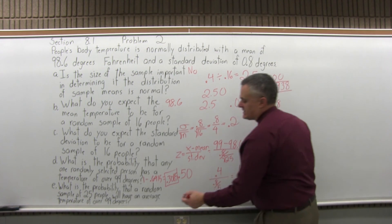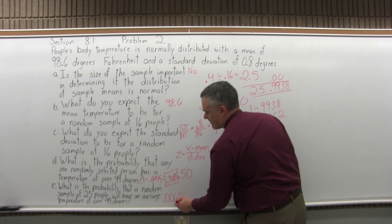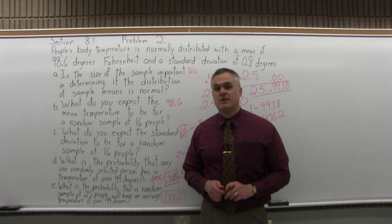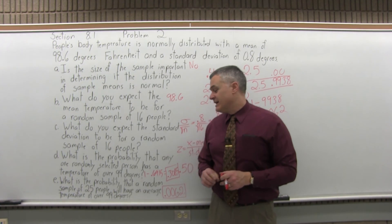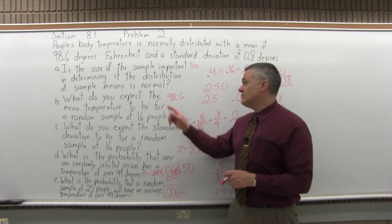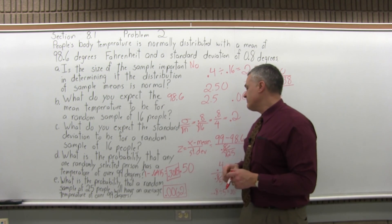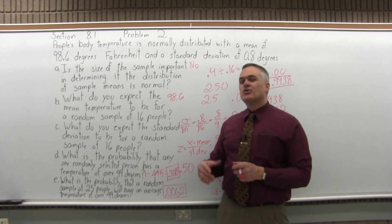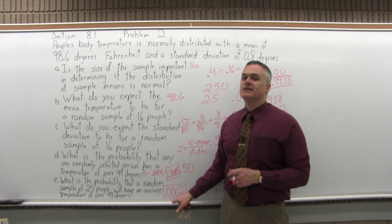So the probability of taking a random sample of 25 people and having their average temperature be over 99 degrees is very unlikely — even though 99 is pretty close to the regular temperature. One person being over 99 degrees: not that unlikely, almost 31% chance. A sample of 25 with an average over 99: very unlikely, less than 1%.